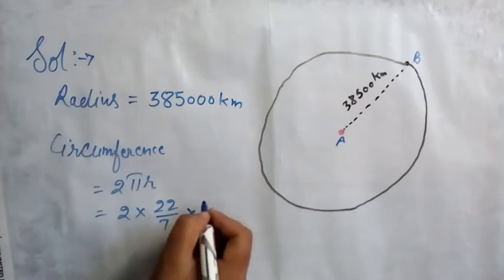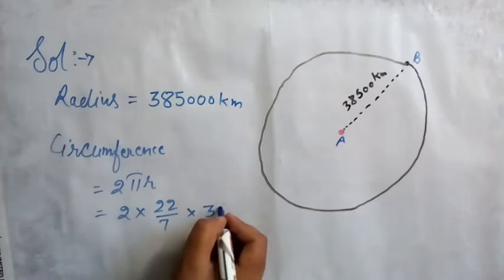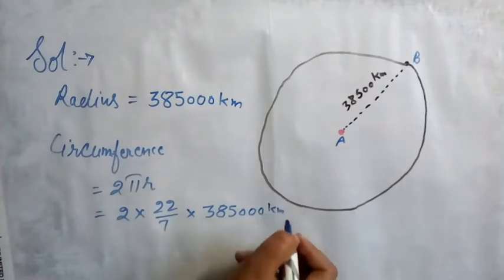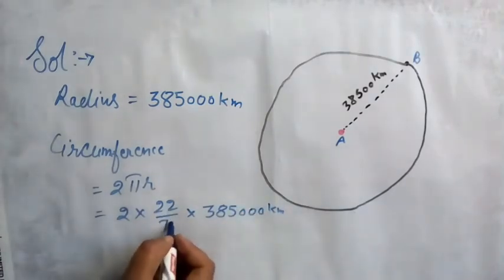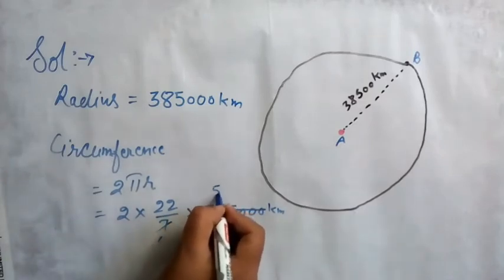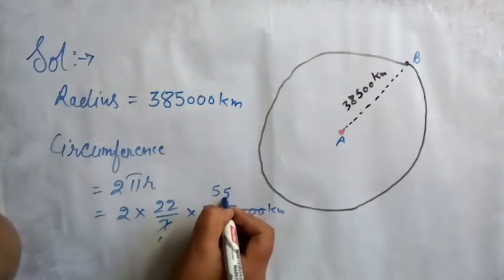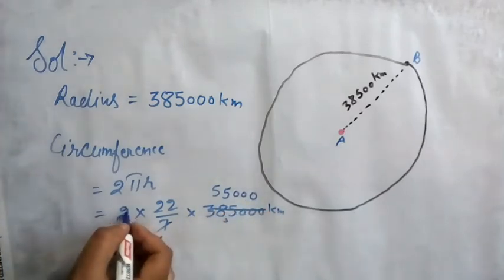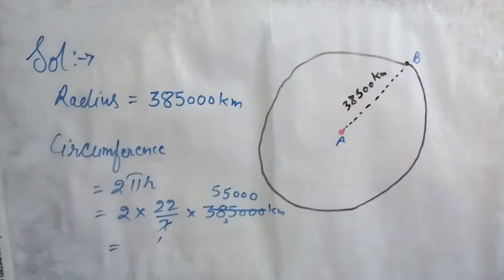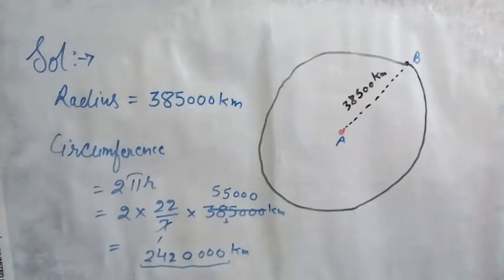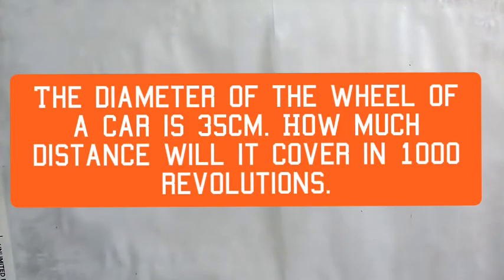We know π is 22/7 and radius is 3,85,000 kilometers. Simplifying: 7 into 385,000 gives 55,000, then multiplying gives the distance covered by moon as 24,20,000 kilometers, which is the required solution.